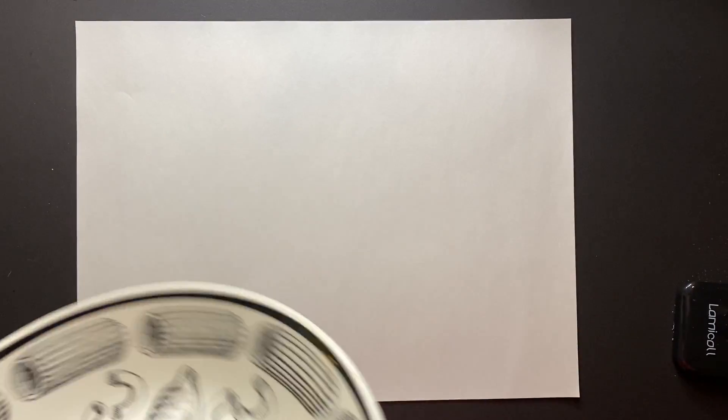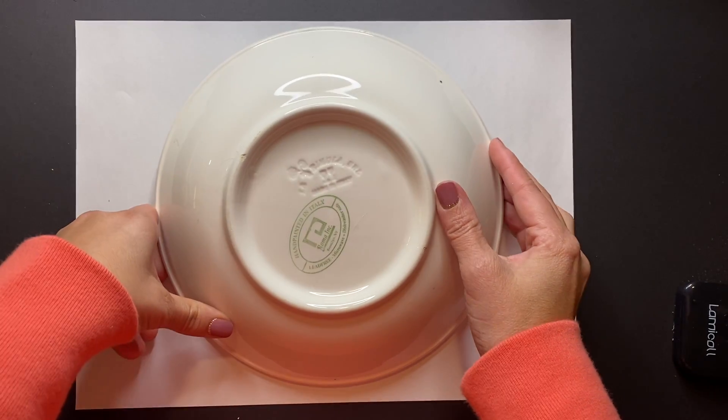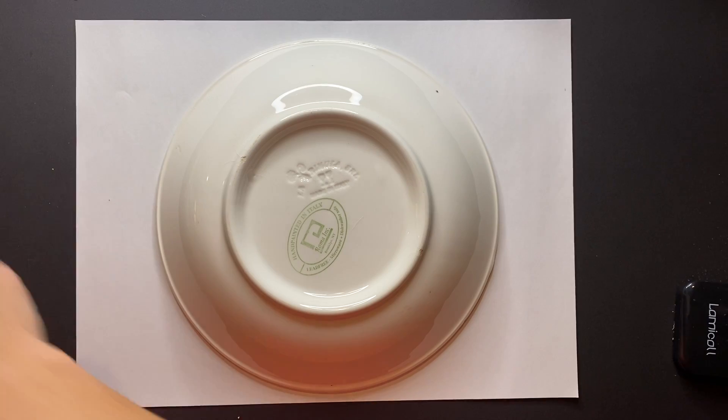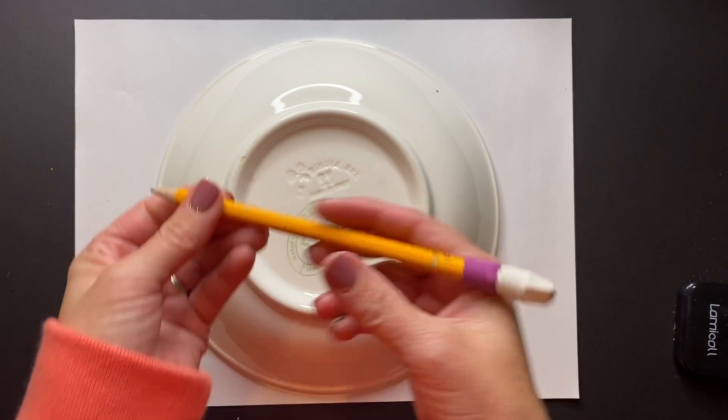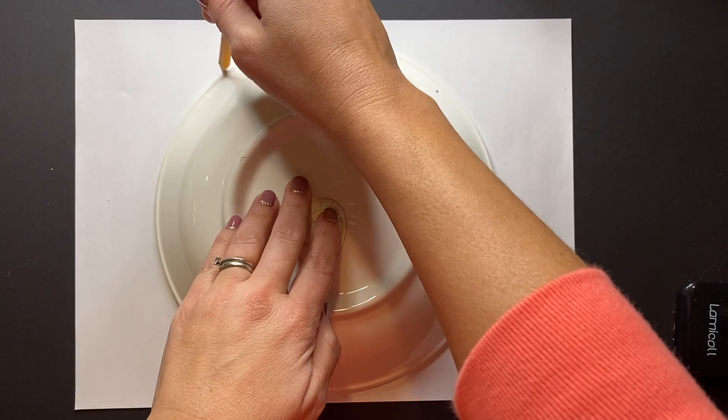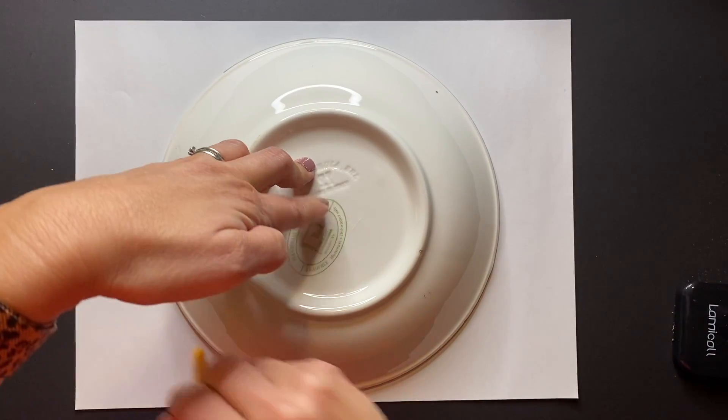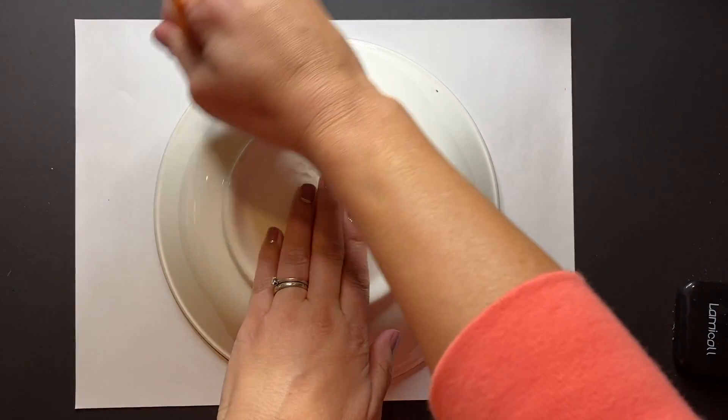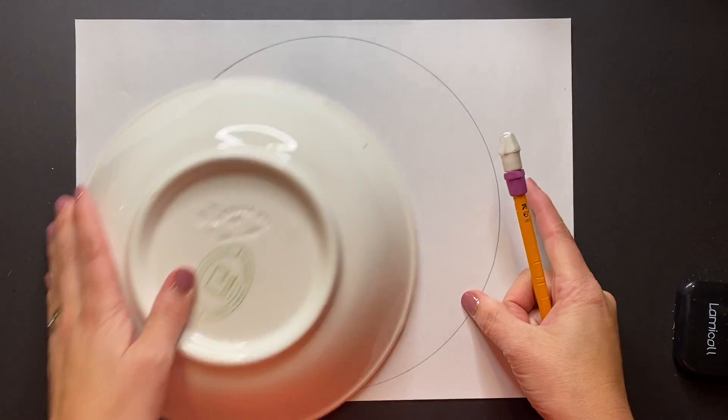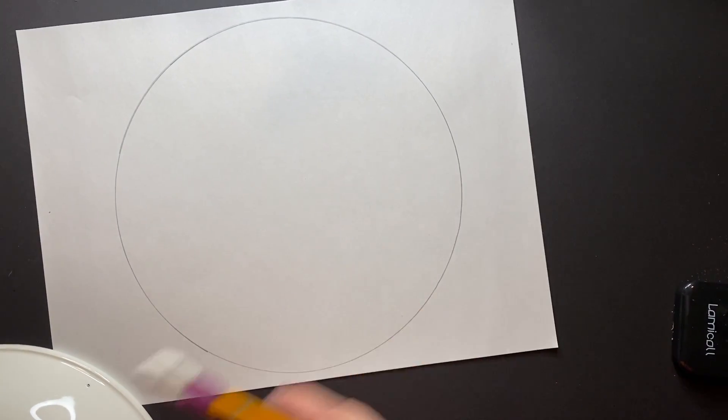Now we are going to begin our radial symmetry by tracing a very large circle in the center of our paper using any bowl you have around the house and a pencil. Hold down in the middle, holding nice and steady as you go all the way around that bowl tracing a perfect circle.